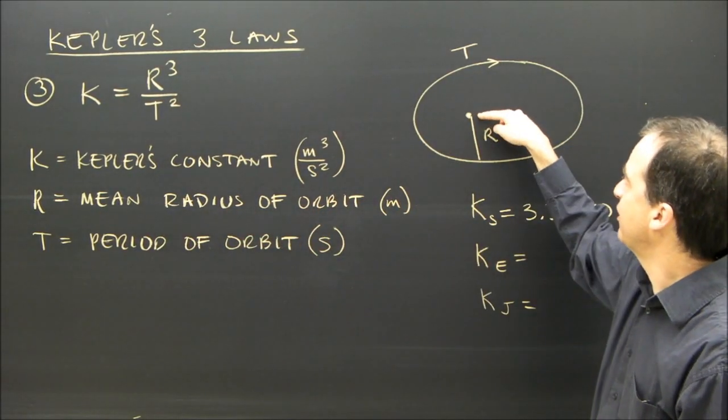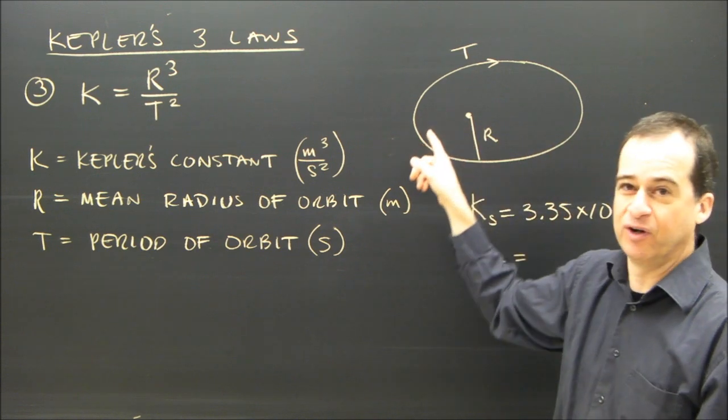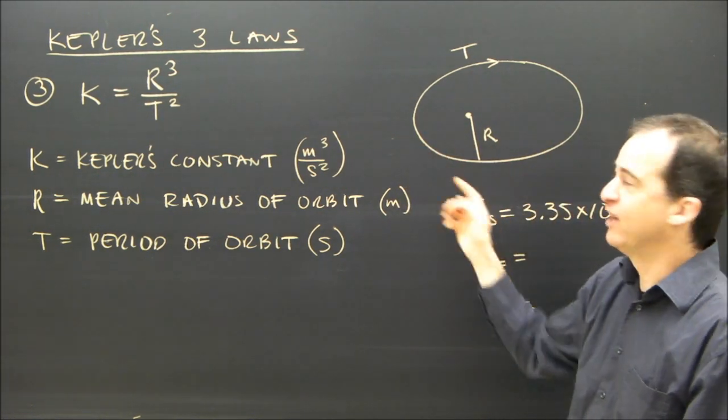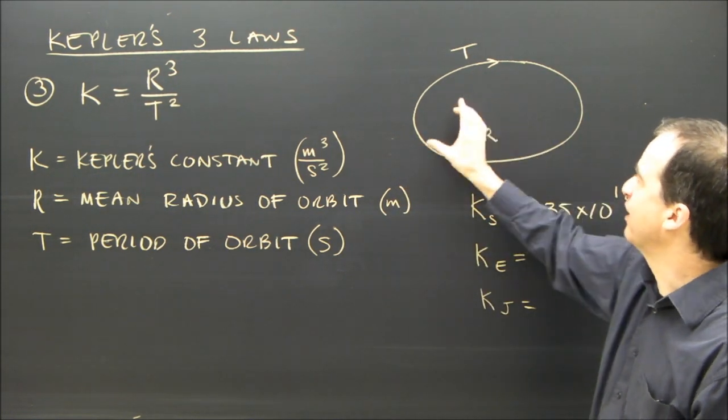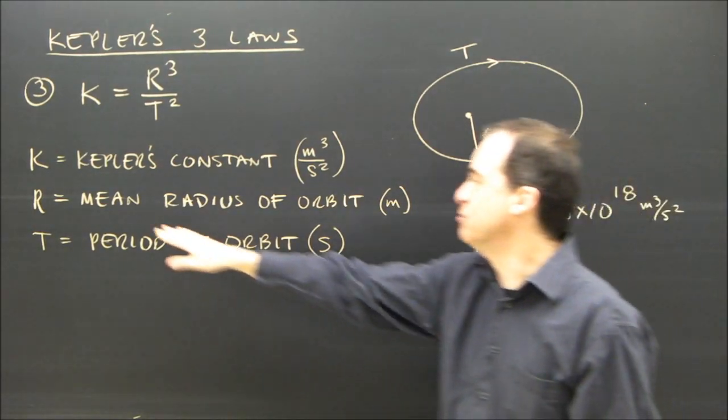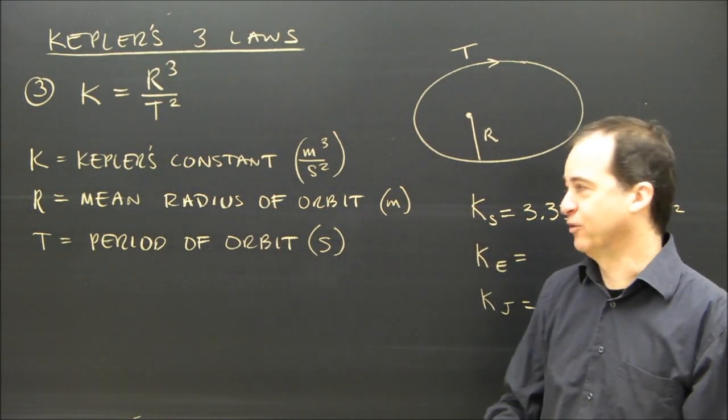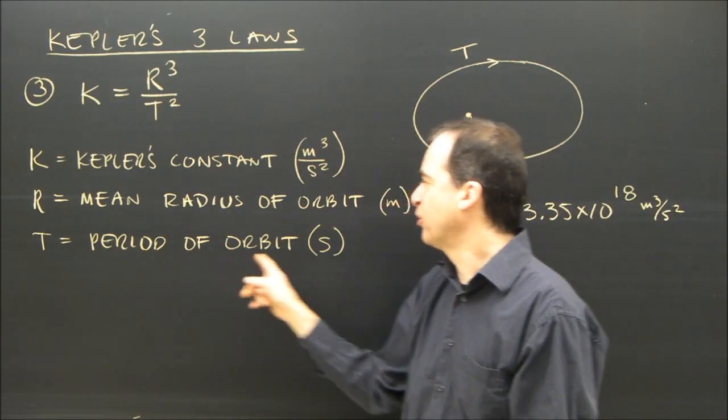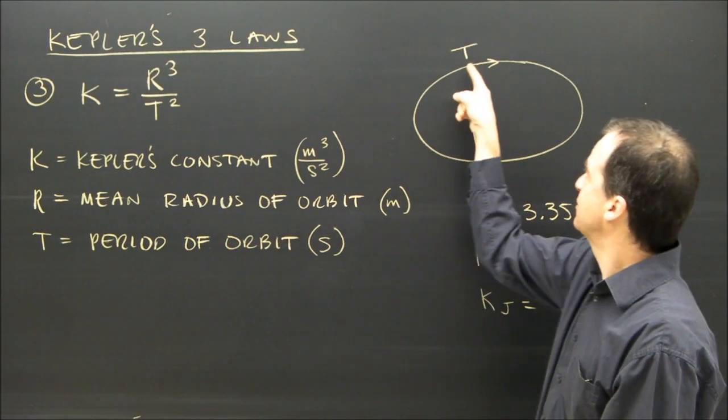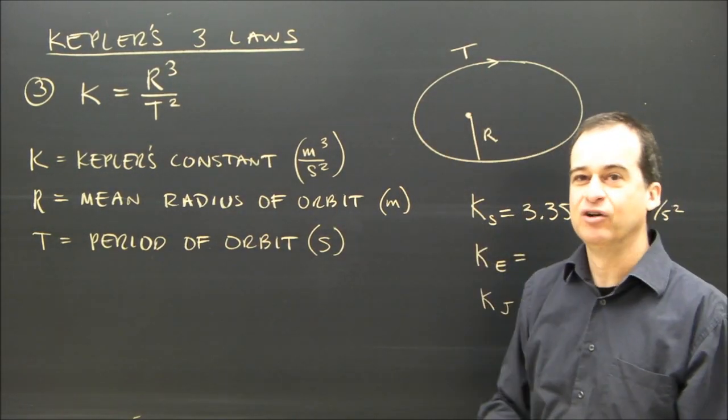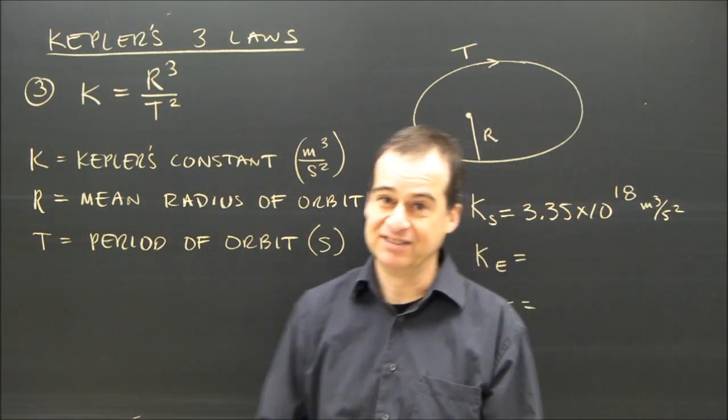If we have the sun here and the earth going around the sun or any planet going around the sun, we already said it goes in an ellipse, so the radius is going to change. So we use the mean radius to do this calculation, and it's in meters. t is the period of orbit. That's the time it takes the planet to go around the sun once, and that's got to be given in seconds.